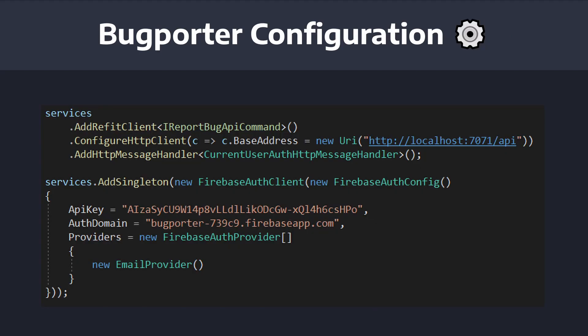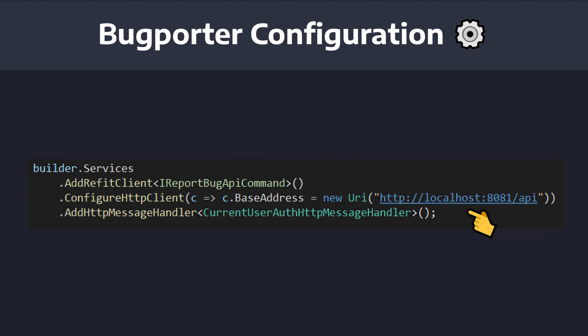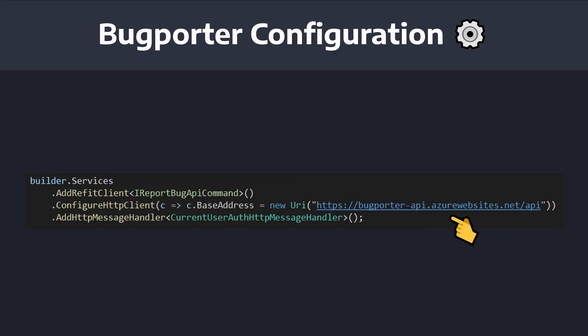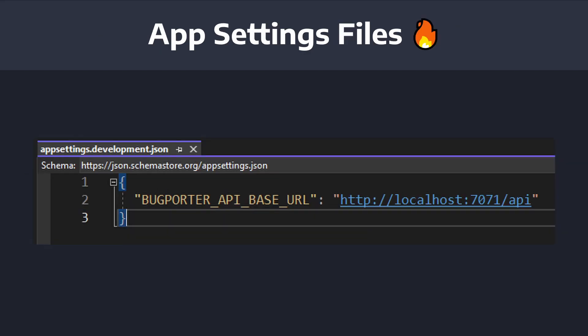In our .NET MAUI application BugPorter, we have keys and URLs that are hardcoded in our application, such as the base URL to our API. So in development mode, we might point to our localhost URL on our local machine, but in production, we want to point to our live production Azure function.